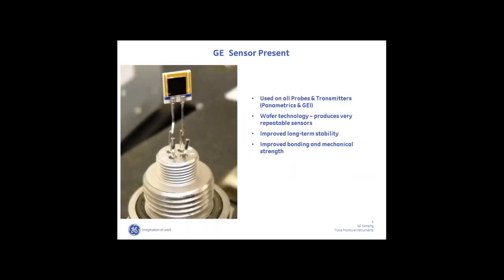After 2012 we went to a silicon substrate design where we make the sensor on a wafer. By coating the wafer with an aluminum oxide layer and then an overcoating of gold, we're able to make many of these sensors on a standard wafer, then slice up the wafer and mount them into our probe assembly. The wafer technology produces very repeatable sensors and gives us very good long-term stability, better bonding, and improved mechanical strength over the previous sensors.